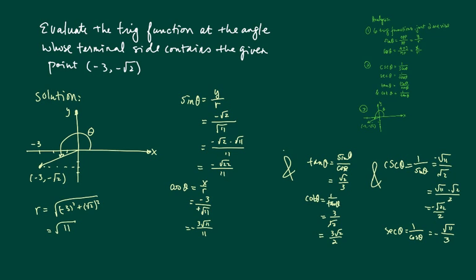Tangent is sine over cosine, cotangent is 1 over tangent. Secant is over here. Cosecant is 1 over sine and secant is 1 over cosine.